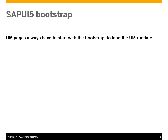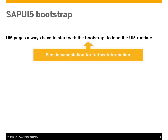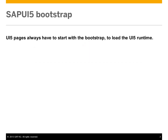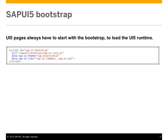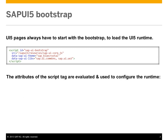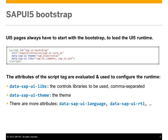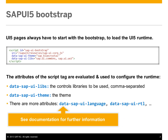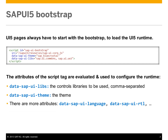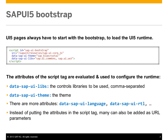SAPUI5 Bootstrap. Your UI5 pages always have to start with the Bootstrap, which is used to load the UI5 runtime. We have a JavaScript tag containing references to the UI5 libraries, including control libraries and a reference to the theme for the application. You can also reference additional libraries that come with UI5, such as support for languages and right-to-left support.